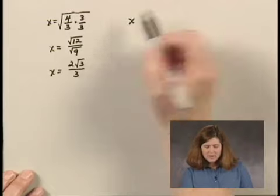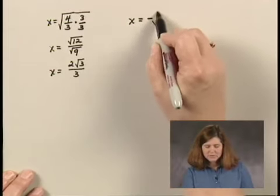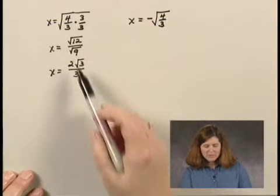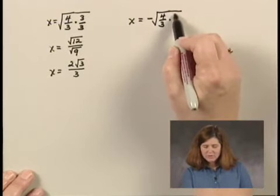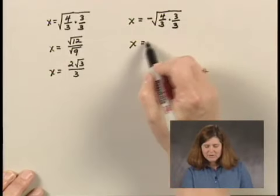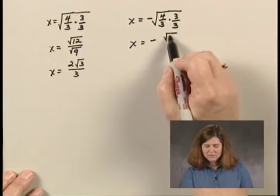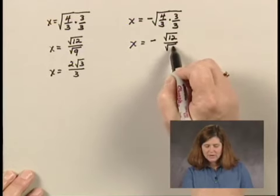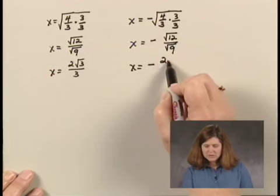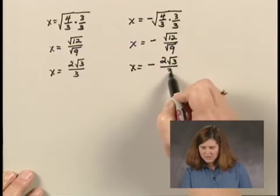The other answer we had was x = -√(4/3). And doing a similar type of rationalization, multiplying by 3/3, it's going to look exactly the same, only with a negative sign out front. I have -√12/√9, or x = -2√3/3.